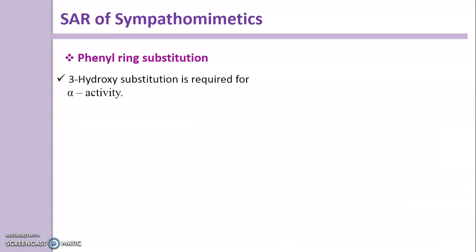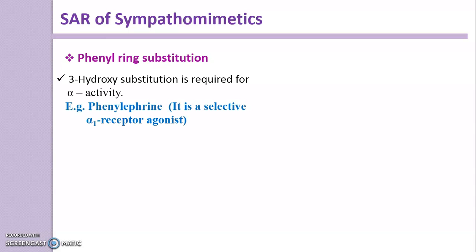A single hydroxyl substitution at the third position confers alpha activity only. Example: Phenylephrine, which is a selective Alpha-1 receptor agonist. Its structure contains only one hydroxyl group at the third position, instead of the Catechol Nucleus. Therefore it shows alpha activity only.